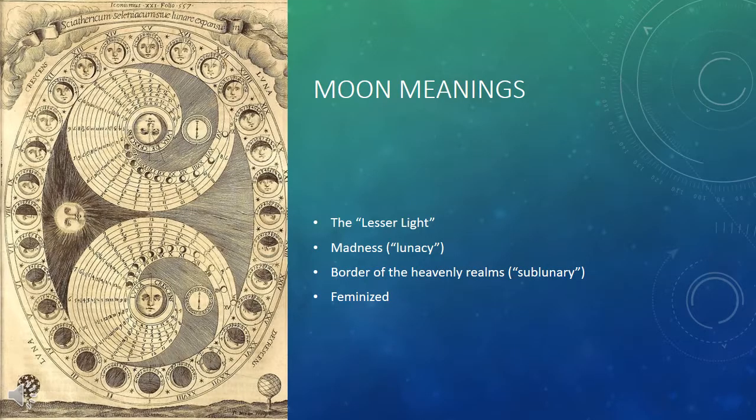It's useful to start by thinking about some of the meanings associated with the moon in Shakespeare's time. First, the moon is called the lesser light when compared with the sun — a fairly obvious association. The moon is also associated with madness and lunacy; the word luna is the word for moon, and so madness comes from or is associated with the moon's effects.